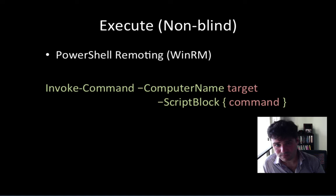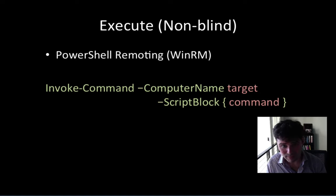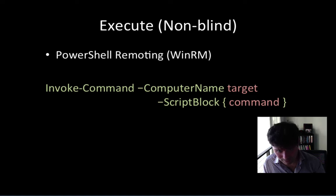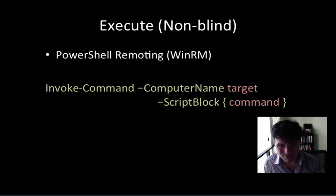What are some techniques for executing commands and getting output back non-blind? Well, you can take advantage of PowerShell remoting via WinRM. WinRM is off by default, but some administrators enable it for system administration. You'll know it's up if port 5985 is reachable to you on the target. Built into Windows is a cmdlet — invoke-command — that lets you specify a computer name and a script block. Within that script block you can put whatever PowerShell expression you want, and Windows will shuffle that off to the target over WinRM, get the results, send them back, and present them to you. So invoke-command gives you two-way command control of a target.